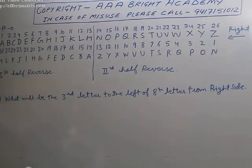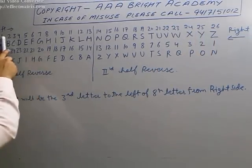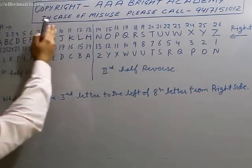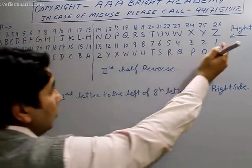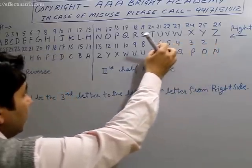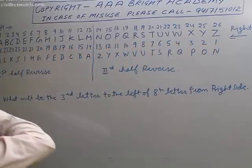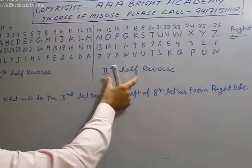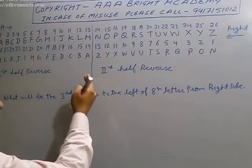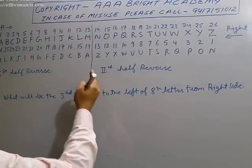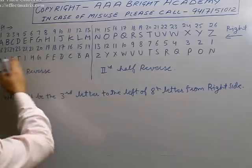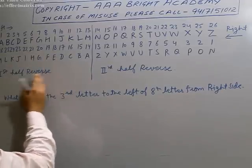You have to give them numbering: 1, 2, 3, 4 from the left side. This is called left side and this is called right side. Both sides have numbering. I have written two parts of alphabets. After doing two parts of alphabets, the first half is reversed.